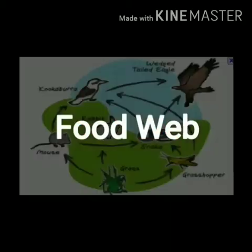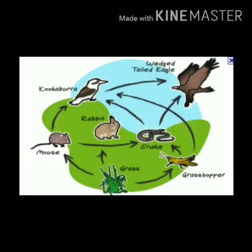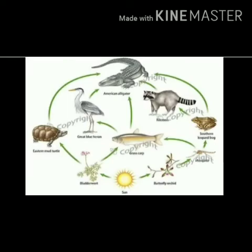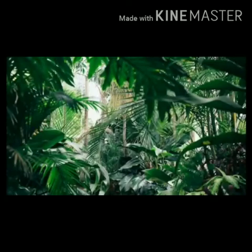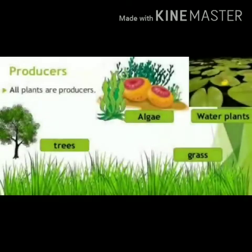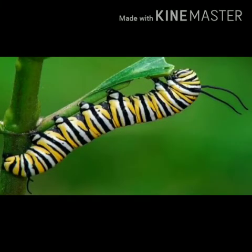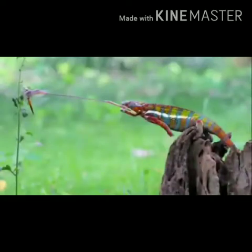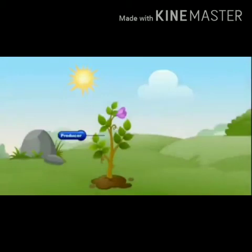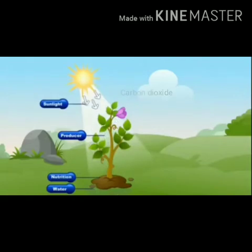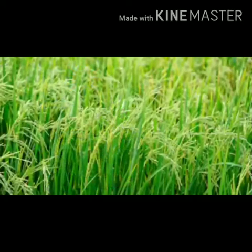Now we will see about food web. One living thing can be a part of a number of food chains, and that gives rise to a food web in nature. The most important food in the food chain is plants. Every living thing gets its food from the environment. Many animals eat only plants. Other animals eat the animals that live on plants. But plants make their own food — in the presence of sunlight, using water and carbon dioxide from the air. This means that plants are the main support of every food chain.